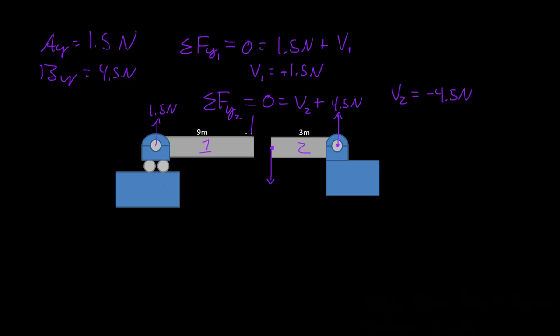So, the 6 Newtons applied a force of 1.5 Newtons. This beam felt a force of 1.5 Newtons being applied to it, this part of the beam. This part of the beam felt a force of 4.5 Newtons.